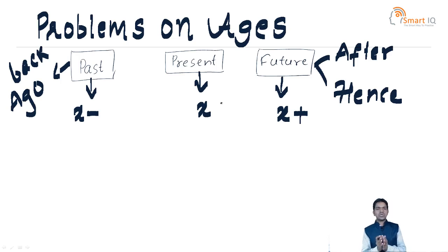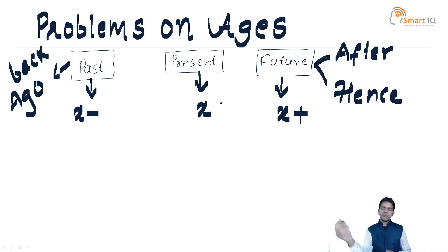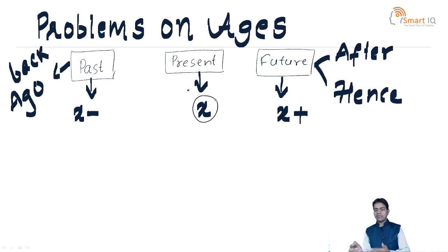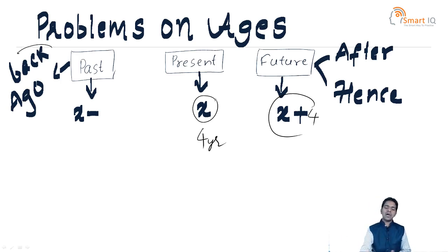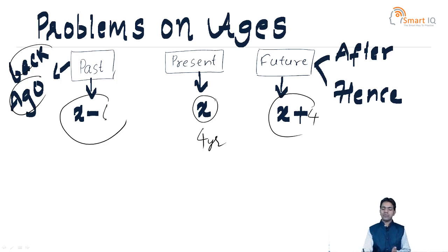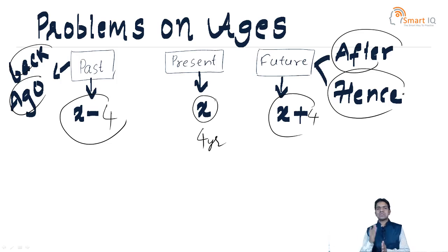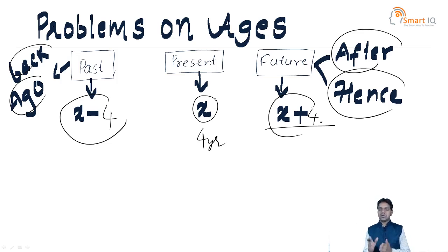There are three kinds of questions. In the question, there are three concepts: past, present, and future. For example, take the present age of Rama as X years. Rama's age after four years means you have to take X plus four years. Whenever the words 'back' or 'ago' are given — like two years ago, four years ago, four years back — you have to take X minus four. Whenever the word 'after' or 'hence' is given, you have to take X plus four. So in future that is X plus four years, and in the past that is X minus four years.